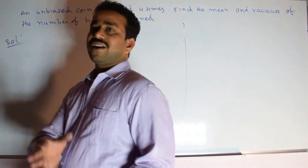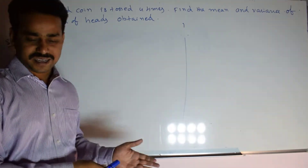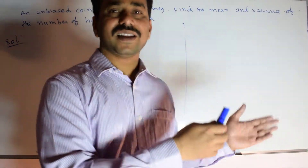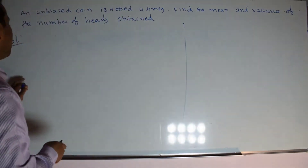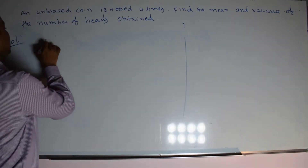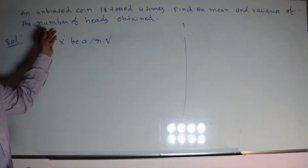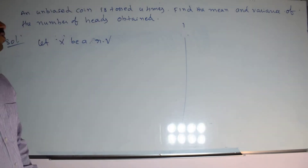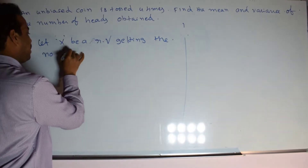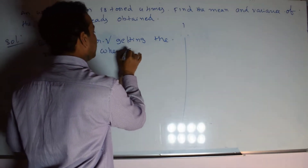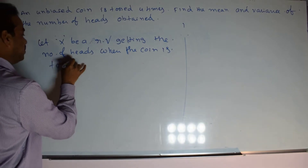Here the experiment is tossing a coin 4 times — that is the random experiment. Now let us assume a random variable. First we need to build a probability distribution. From the probability distribution, we have to calculate the mean, which means expected value of x, E(x), and then the variance of x. So let us build the probability distribution first. Let x be a random variable denoting the number of heads when the coin is tossed 4 times.